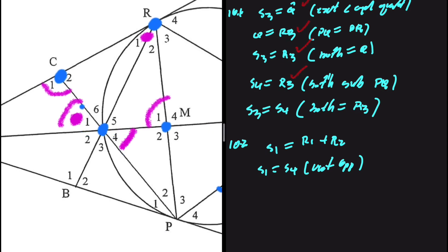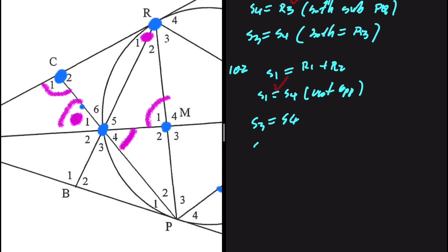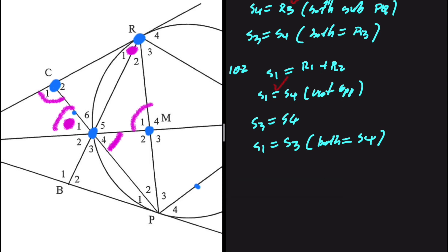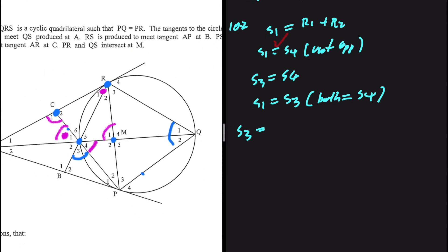Confirming that S1 and S4 are indeed vertically opposite. From 10.1 we showed S3 equals S4, and now S1 equals S4, so S1 equals S3 as they are both equal to S4. Recall also that S3 equals angle Q (which equals Q1 plus Q2), because SRQP is a cyclic quadrilateral — S3 is an exterior angle of that cyclic quad.